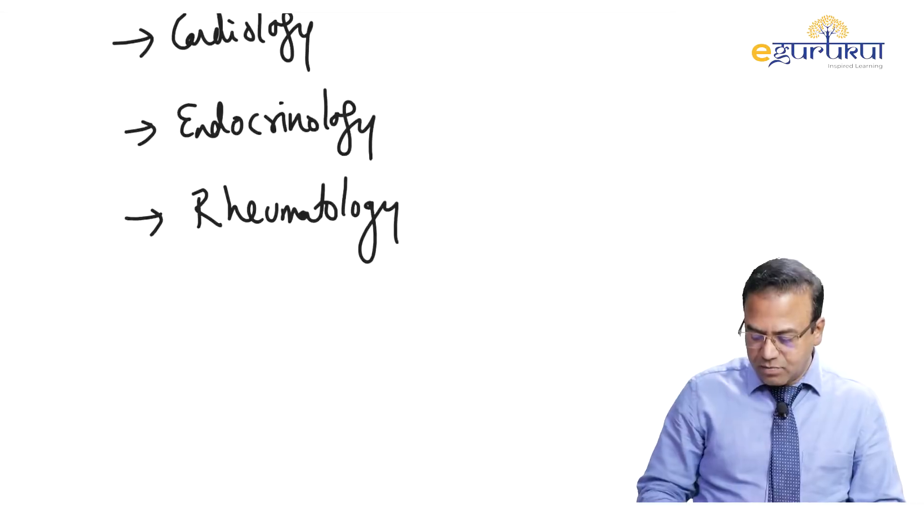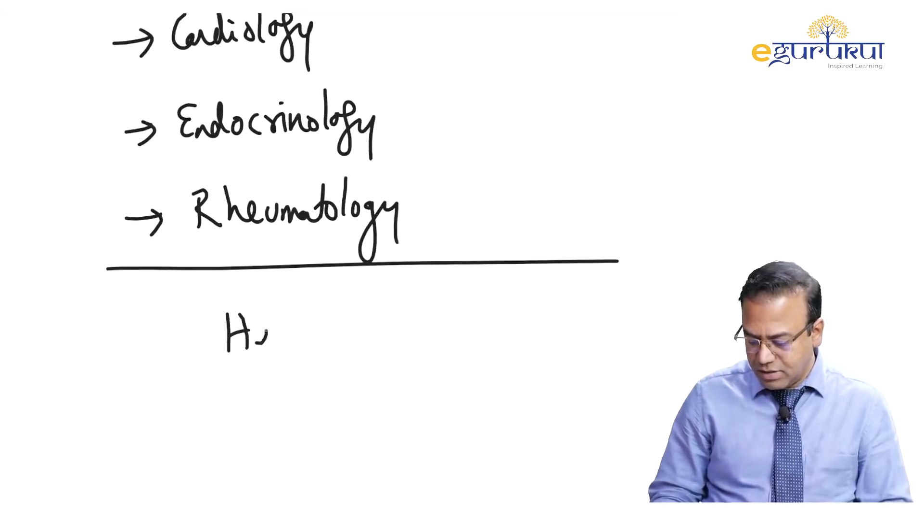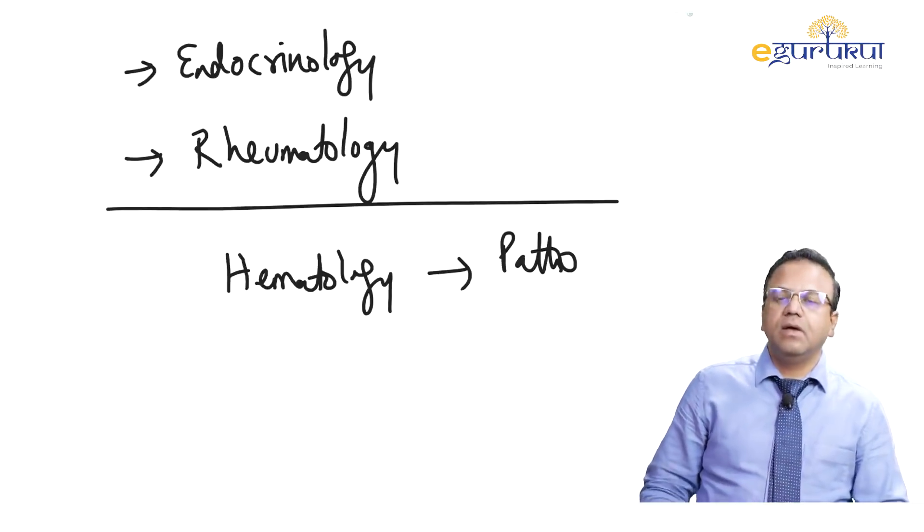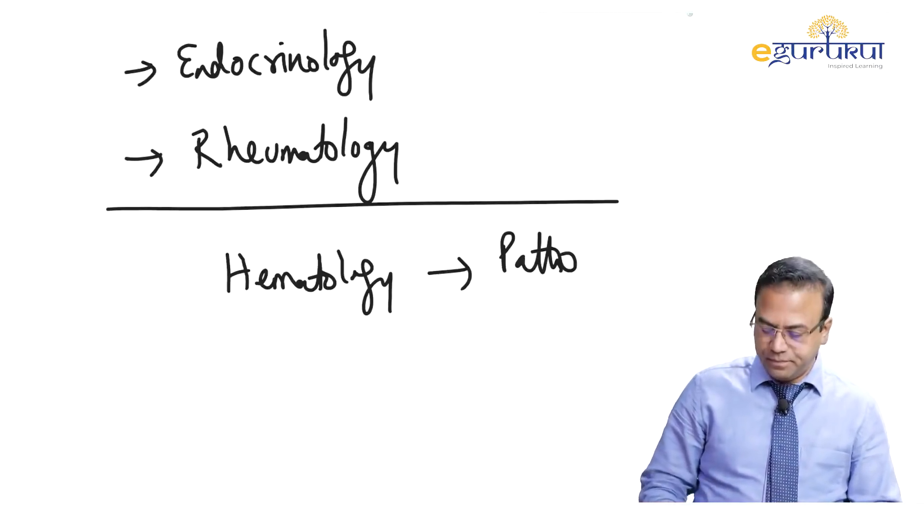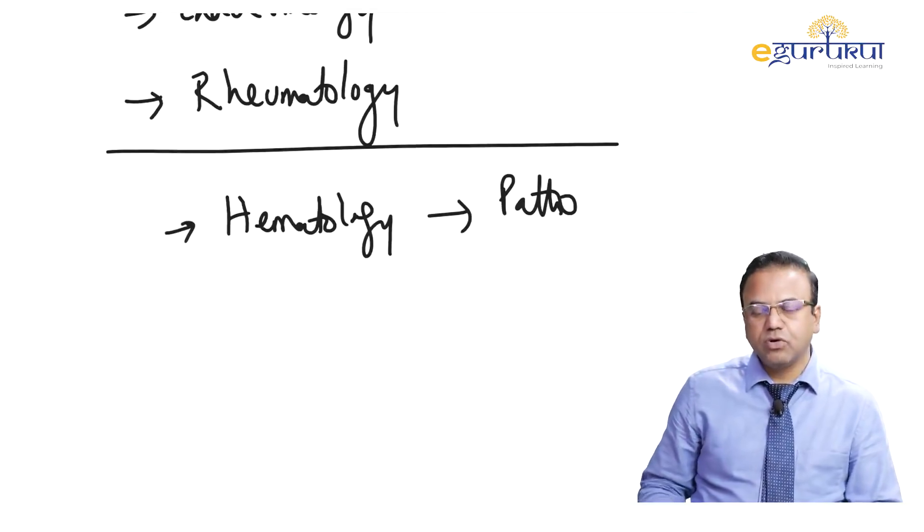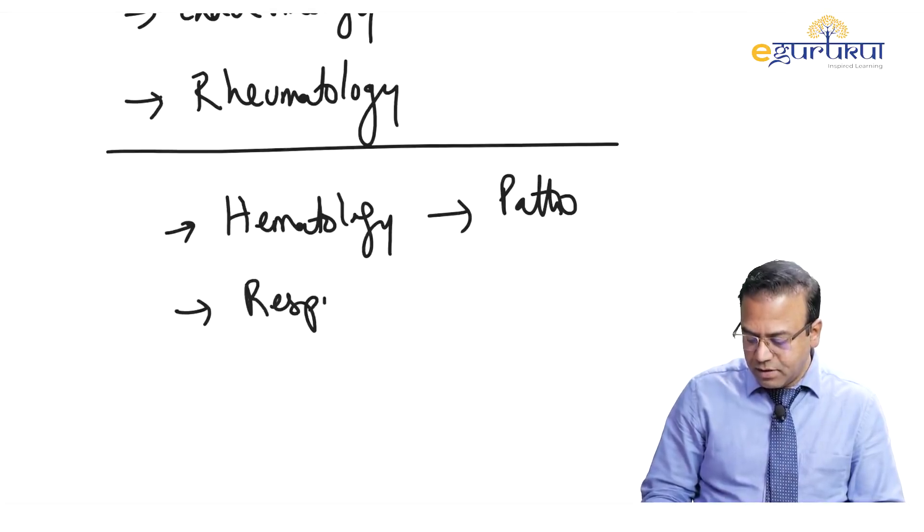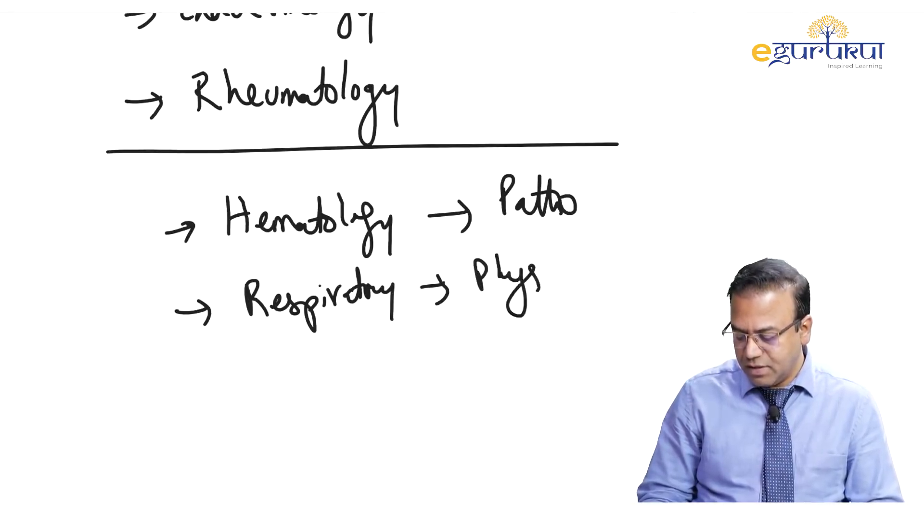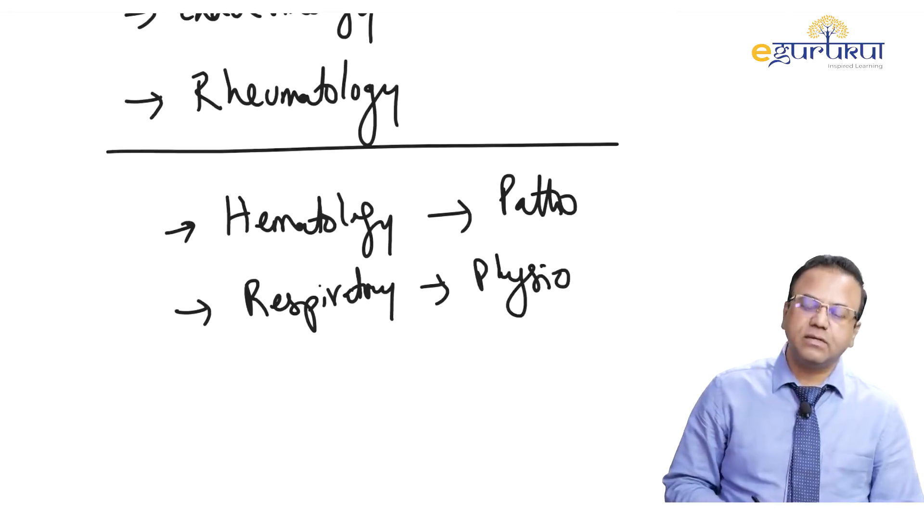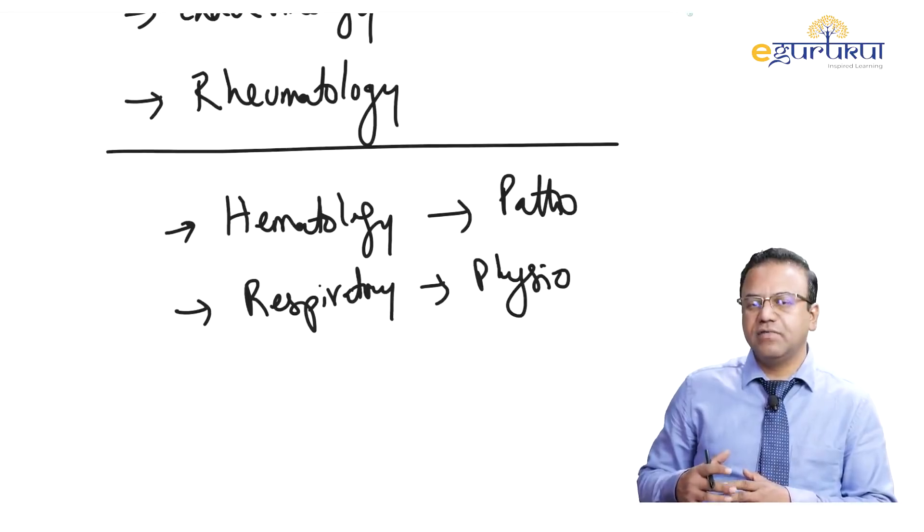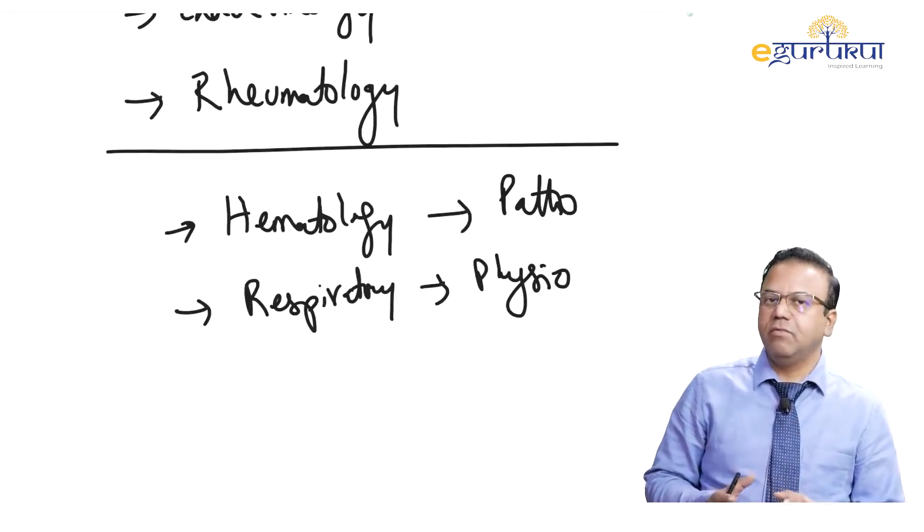This is not the case with subjects like hematology, which is significantly overlapping with pathology. Much of the hemat questions in our exam are very similar to what you see in patho. There's a huge overlap for hemat from patho, also for nephrology and the respiratory part. If you look at previous paper questions, the bulk of respiratory questions are actually physio-based. Very few questions come on asthma or COPD. Most of it is the physiological basis of the disease.